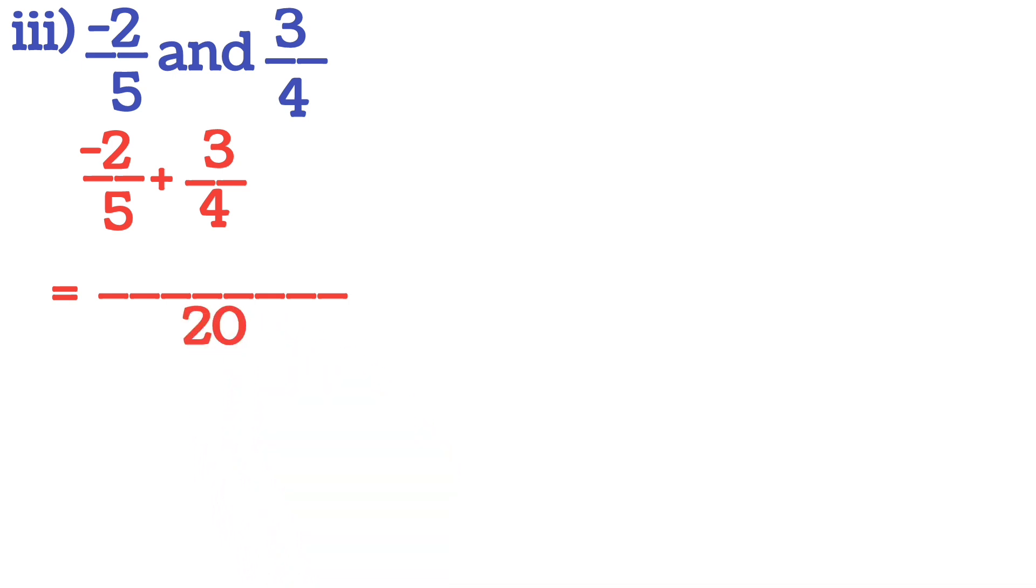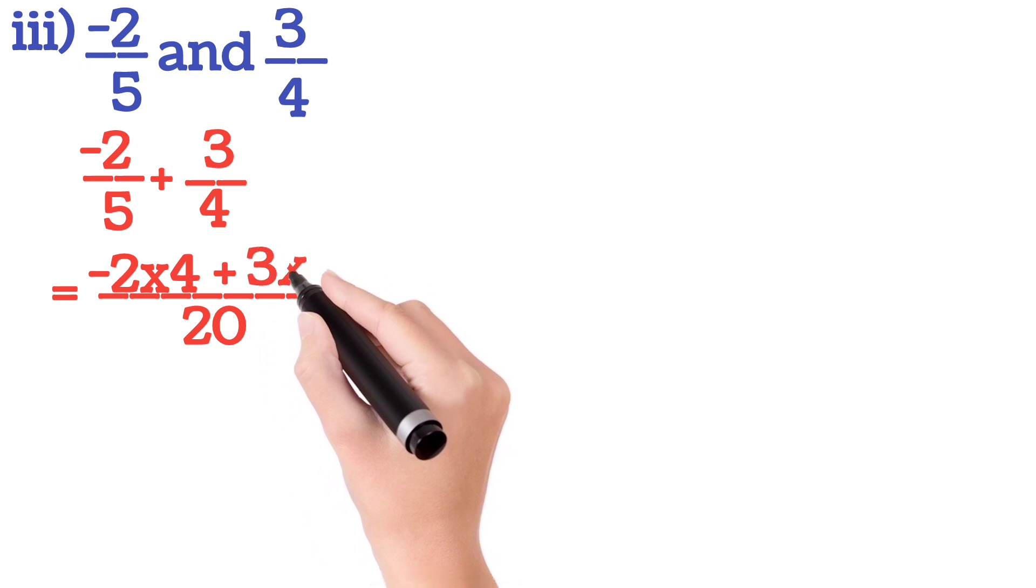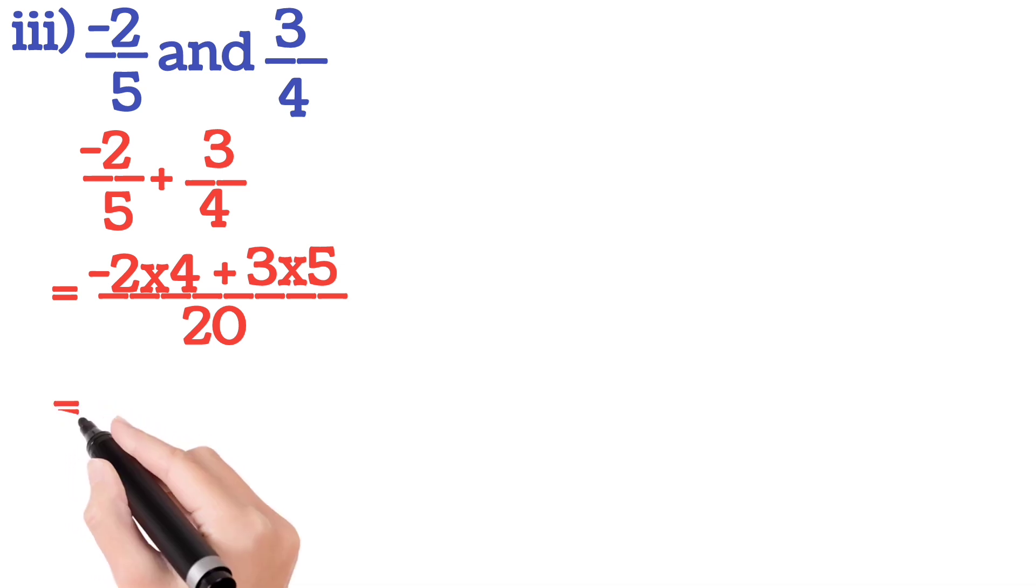Then you divide this 20 by 5, so what will come? 4 is 20. Then you multiply this 4 with the numerator minus 2. So how you will write: minus 2 into 4 plus again divide 20 by 4, so you will get 5. So you write 3 into 5. Now next step what you will do? You will multiply and write.